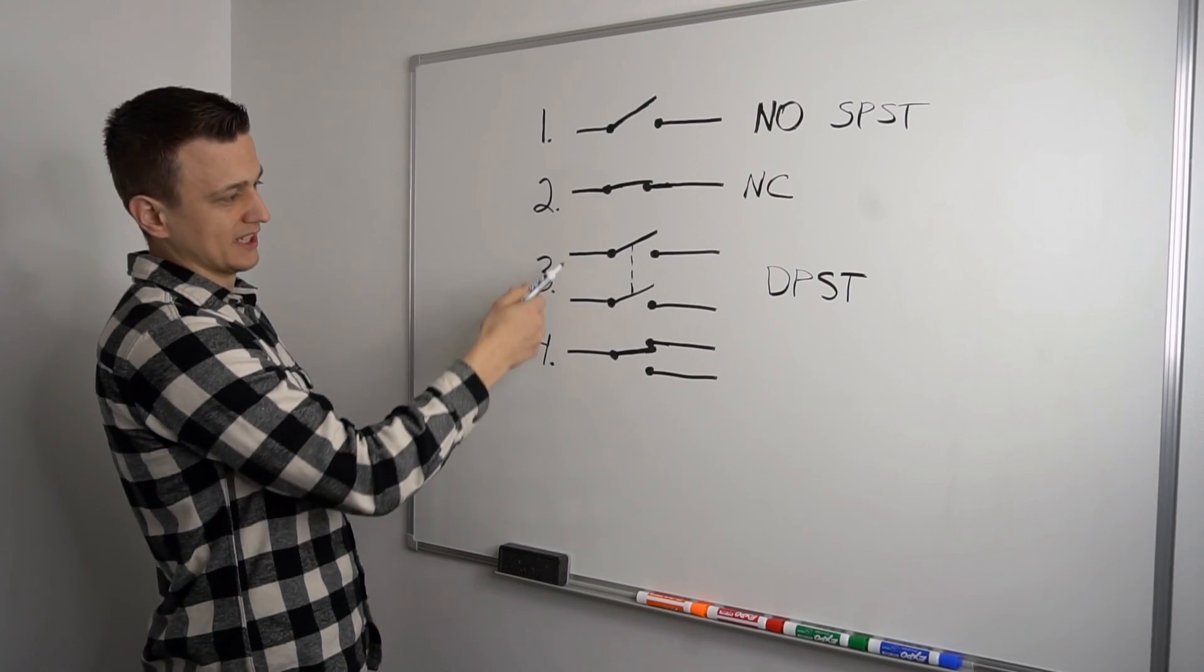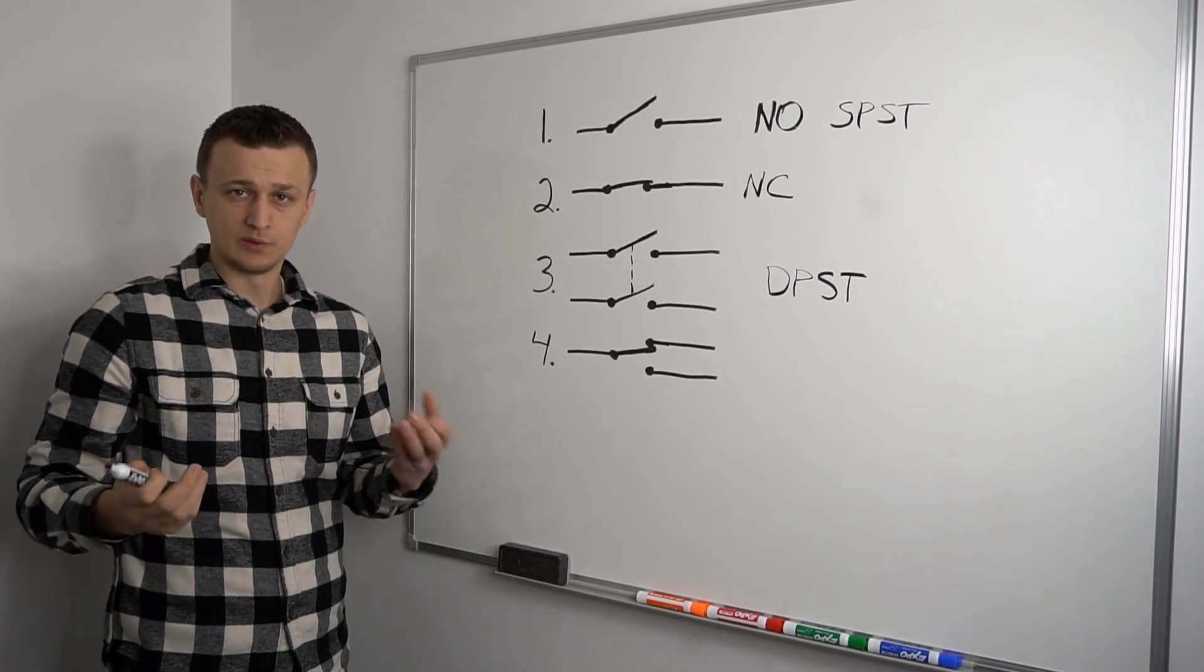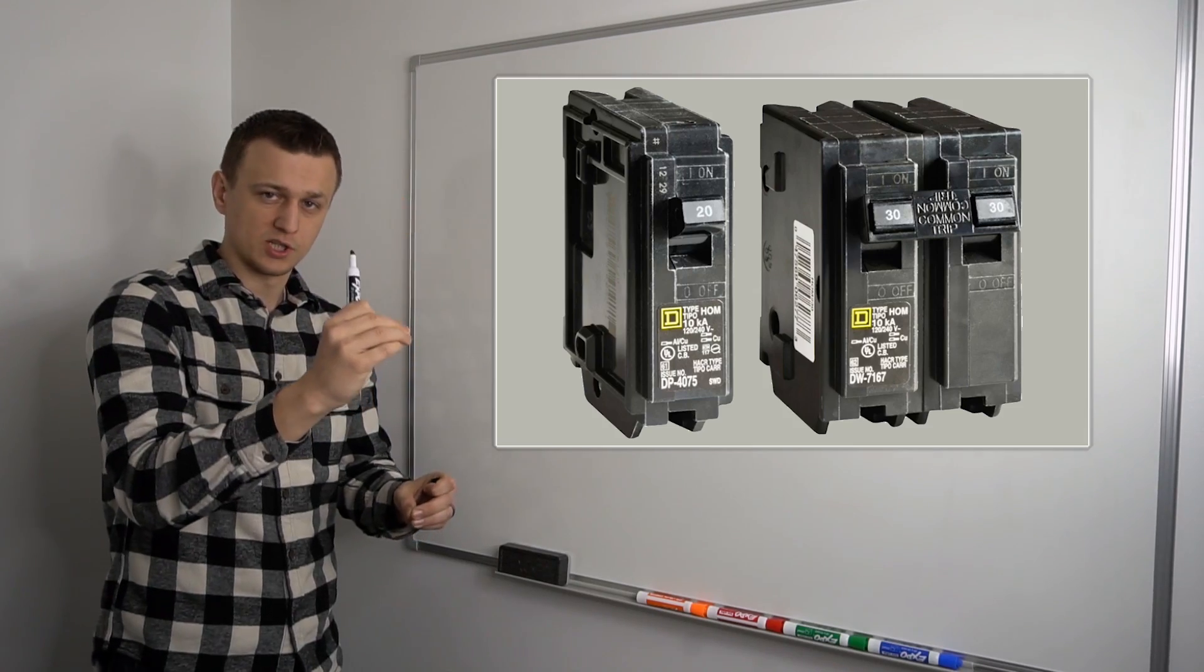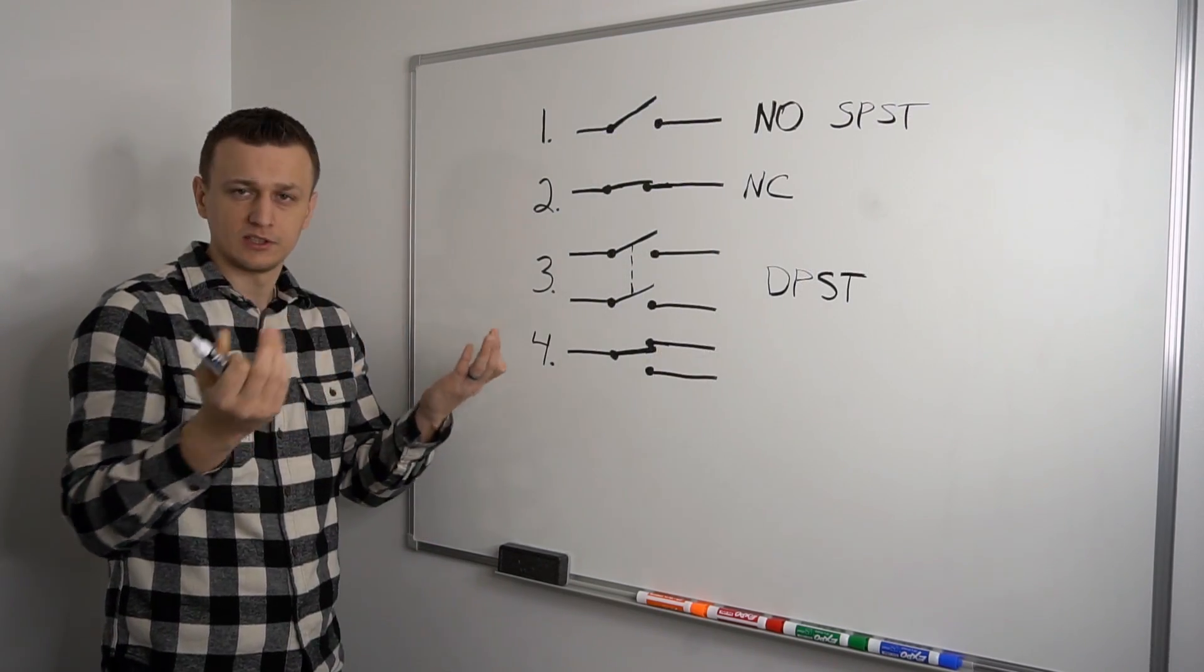So an example of this would be like a two-pole circuit breaker. You know, the bigger ones, where the two of them are connected. Of course, if you turn one of them off, the other one gets turned off as well.